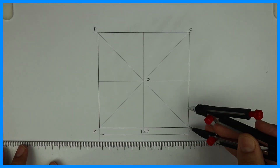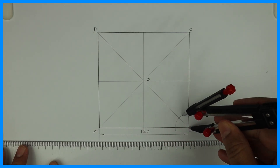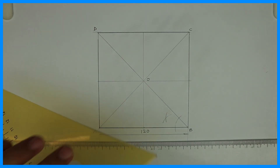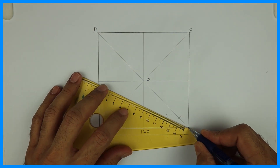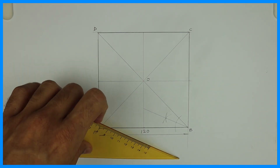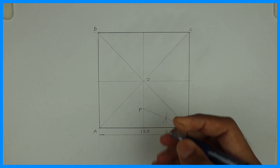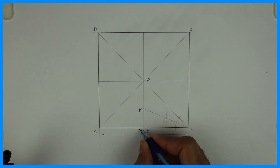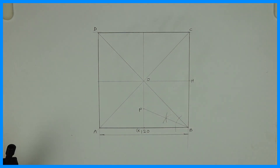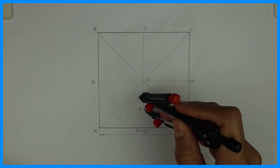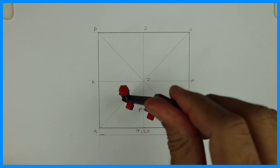Now we need to bisect angle OBA. I'm bisecting OBA. Wherever it cuts with the vertical line, that will be point P. We'll take the distance equal to PG, and we can label the points G, H, J, and K. So I'm taking P to G and will draw a circle.